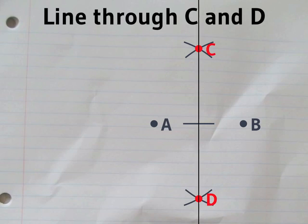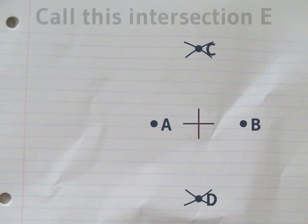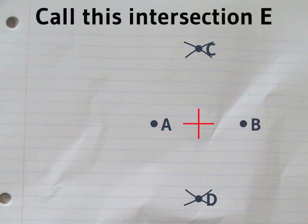Next you connect C and D with a straight line. Let's call E the place where these two straight lines meet.